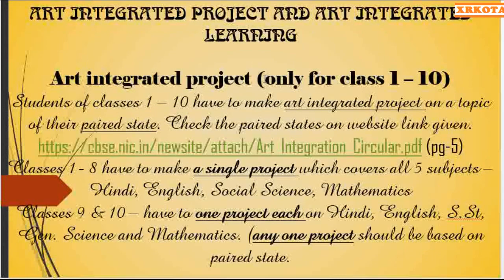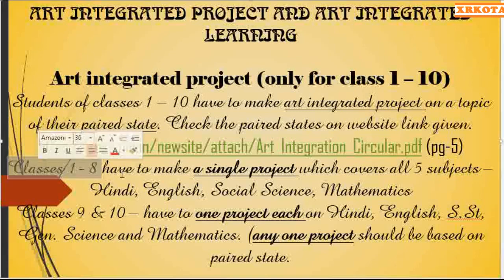For class 1 to 10, students have to make an art integrated project on the topic of their paired state. There is a list on the CBSE PDF, on page number five, where each state and its paired state is given. Your state — for example Rajasthan — is paired with Assam, and students of Rajasthan have to learn about the various arts, culture, and activities of Assam. Students of class 1 to 8 have to make only one project covering all five subjects.